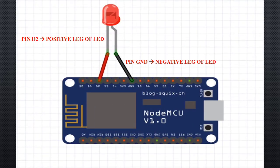This shows the actual pin connection of the LED with the NodeMCU. Make sure the positive leg and negative leg of the LED are connected at the appropriate positions only. Otherwise, you will not be able to see any difference or it may not give you any proper output.